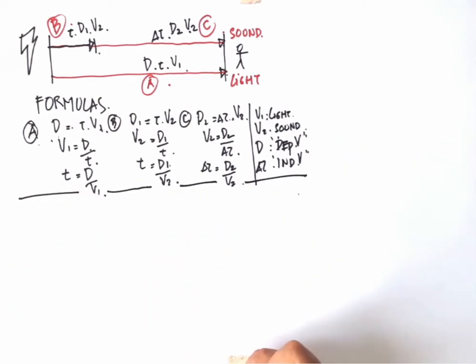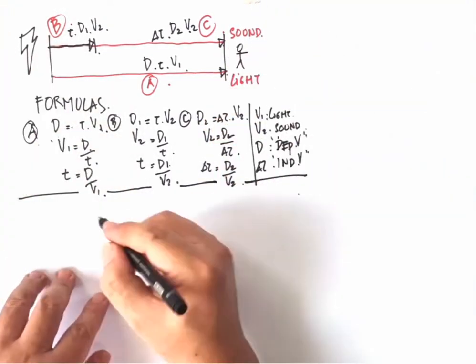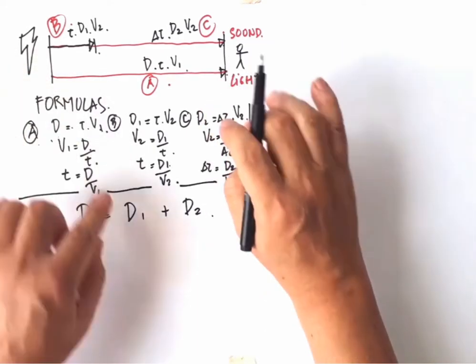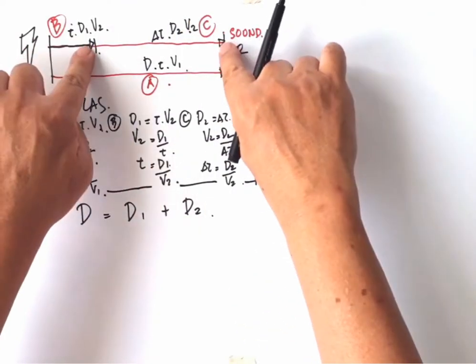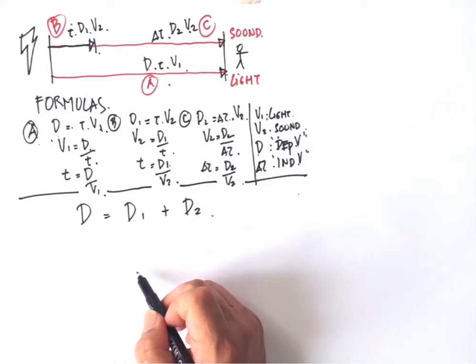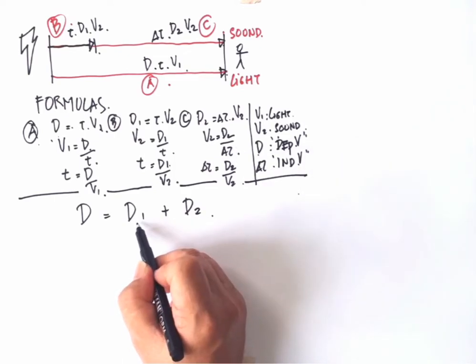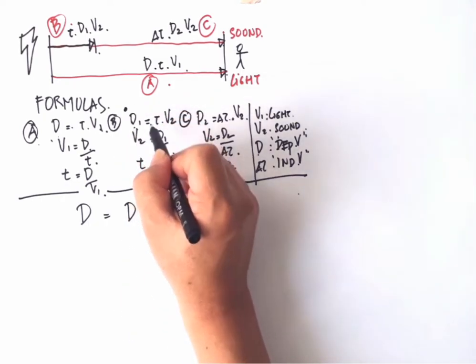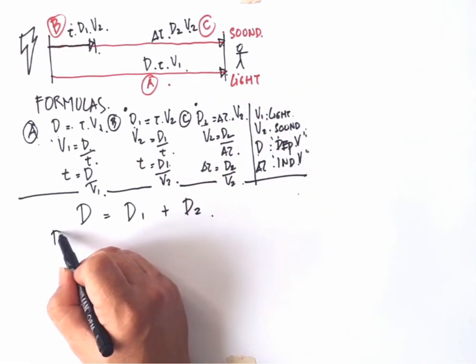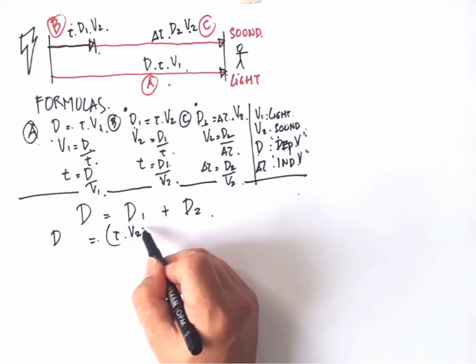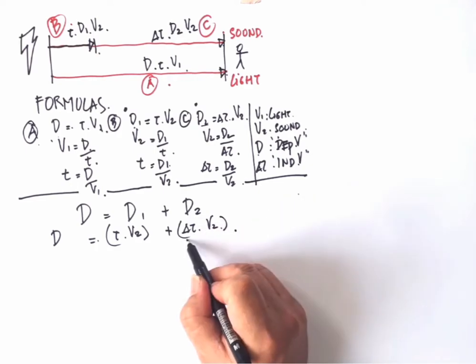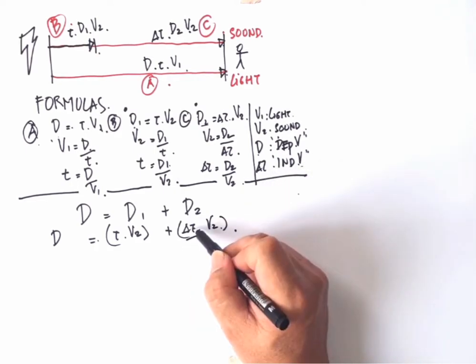Now let us calculate. What is the basic fact here? Of course it will be D equal to D1 plus D2. In this equation we already have our future dependent variable and two variables I don't think we need. So let us change this D1 by this equation and let us change this D2 by this equation. So it will be D equal to T multiplied by V2 plus delta T multiplied by V2.